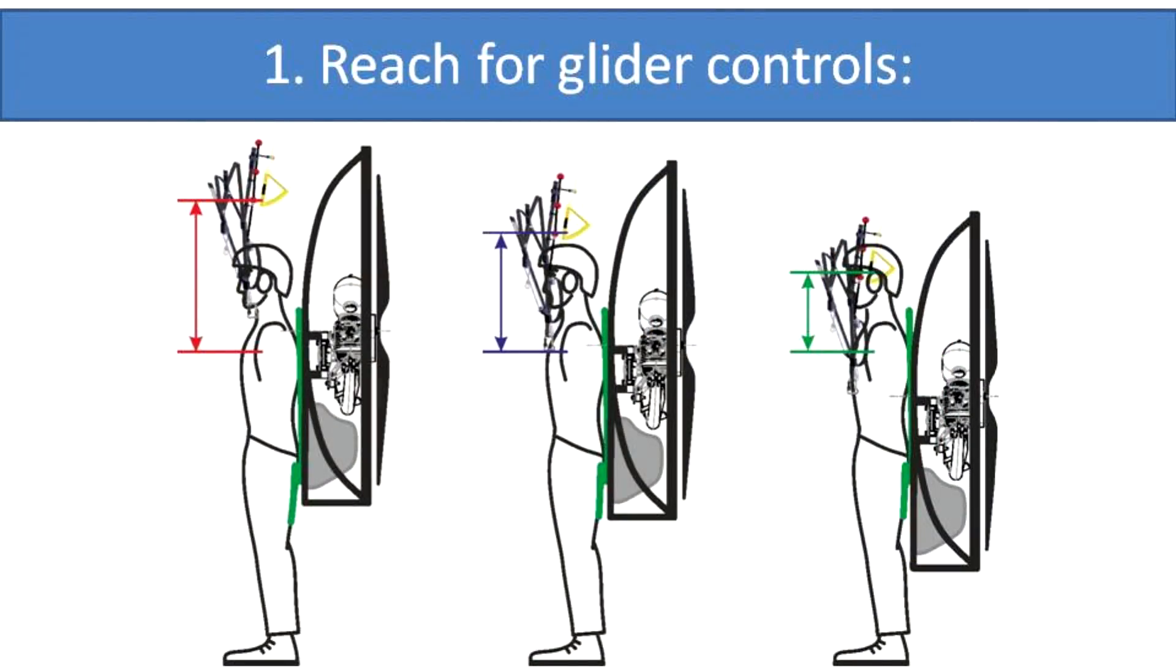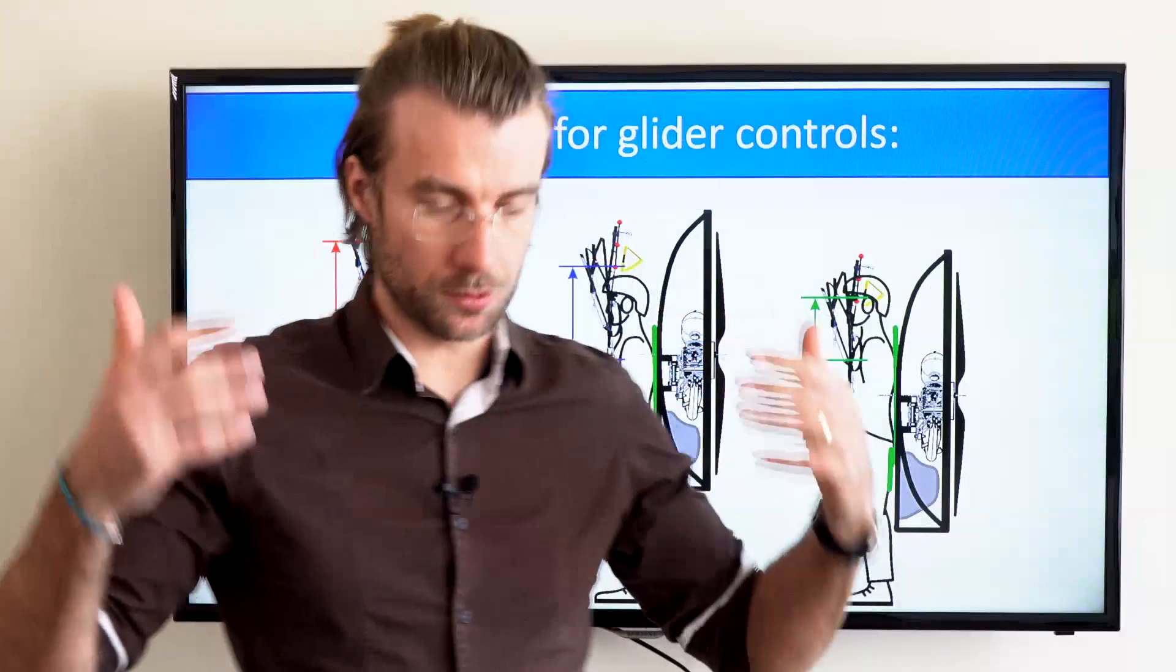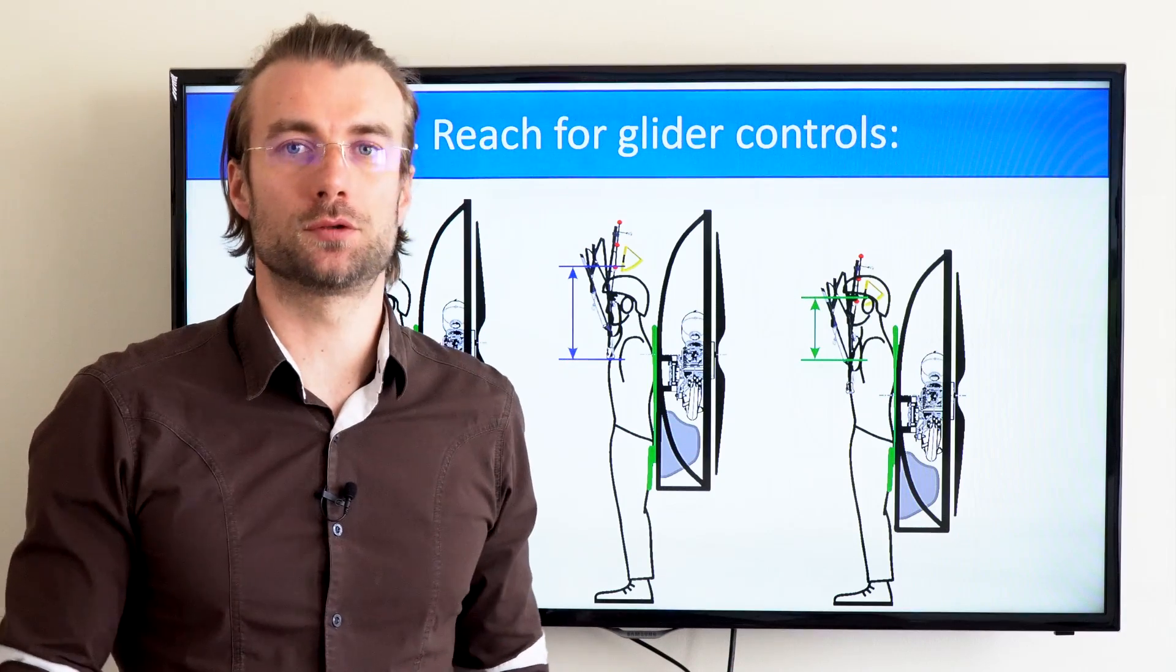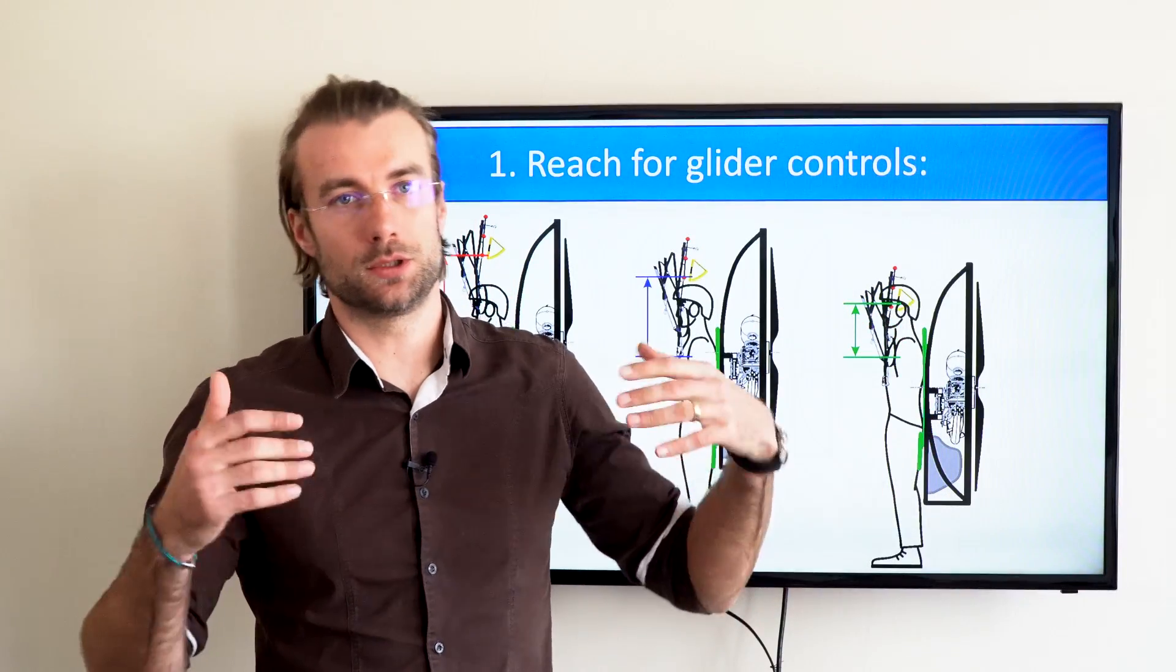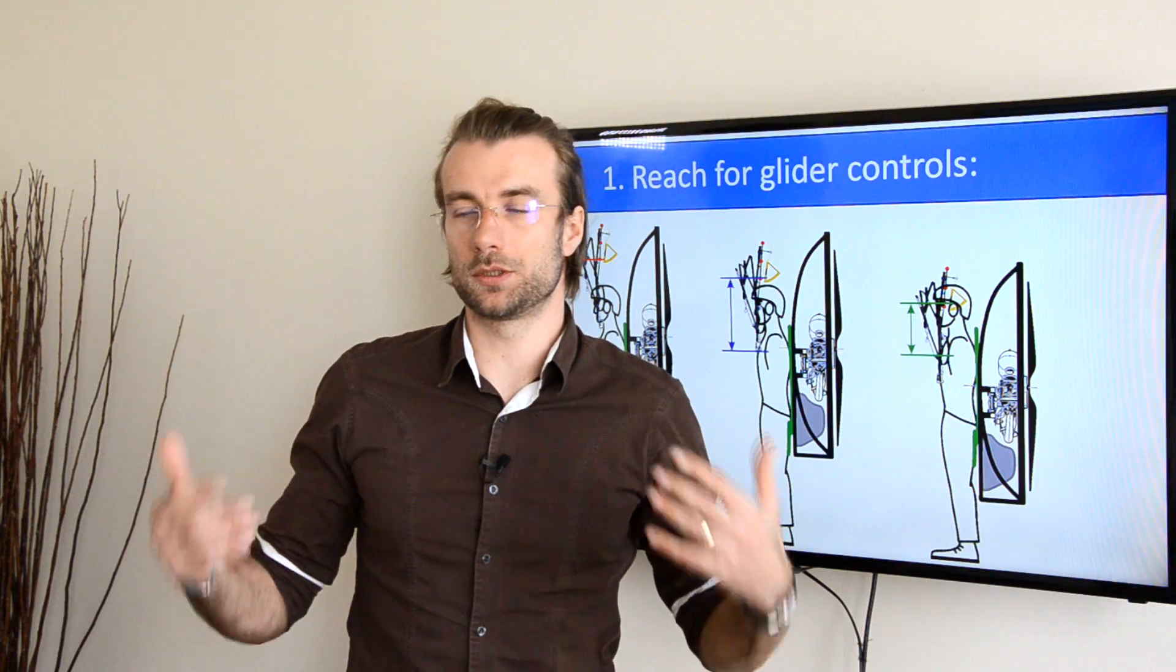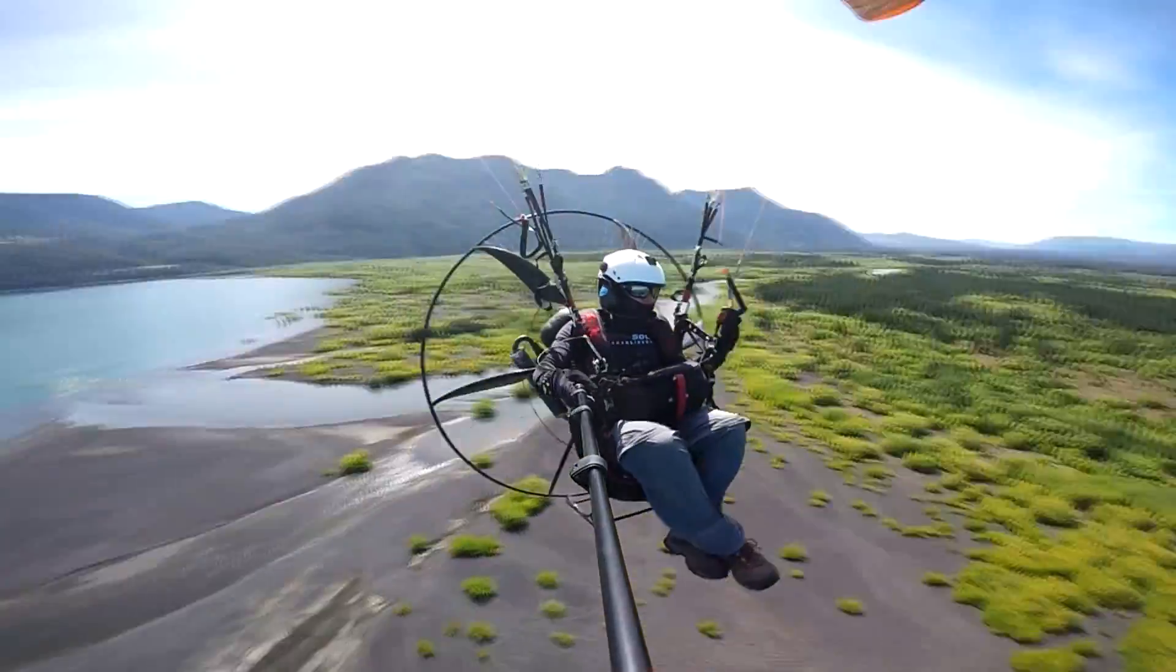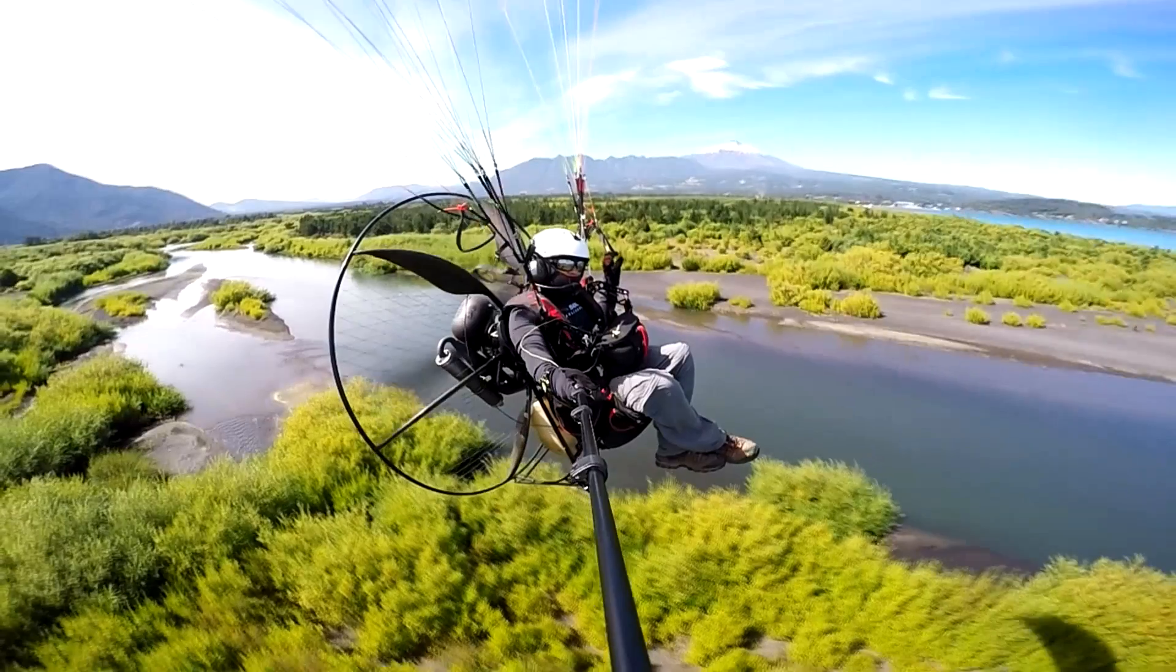The best position is on a low suspension system because all your controls are located pretty low. You have good reach for them, you have good control, you have good visibility. With the low suspension paramotor, the controls are pretty much in the same position as with a paragliding harness.